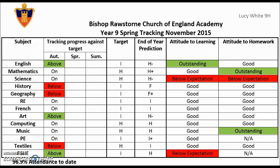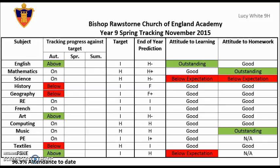This guide has been produced to support the parents of Key Stage 3 students at Bishop Rawstone Church of England Academy in interpreting the Year 7 to 9 tracking reports that they will receive three times a year. In addition to explaining how we record students' progress against their targets and their attitude to learning in lessons and in home study, it will also explain how targets are set using the new Assessment Without Levels framework and how this is likely to equate to GCSE progression going forward.